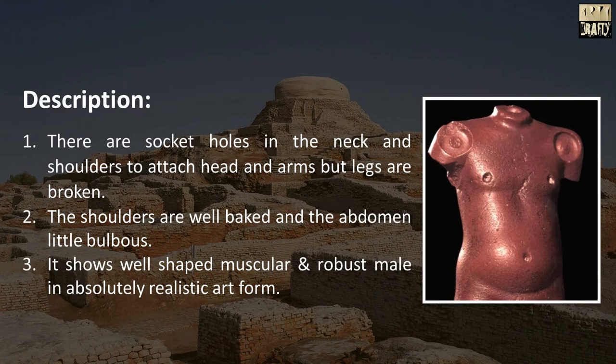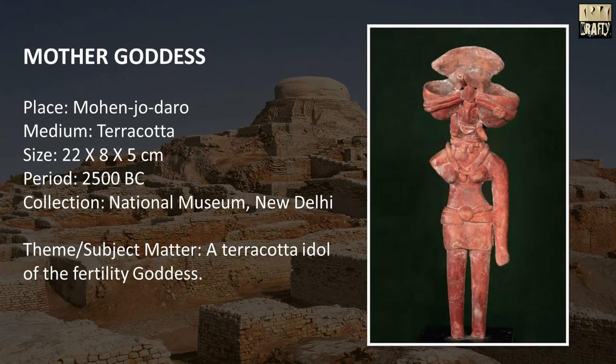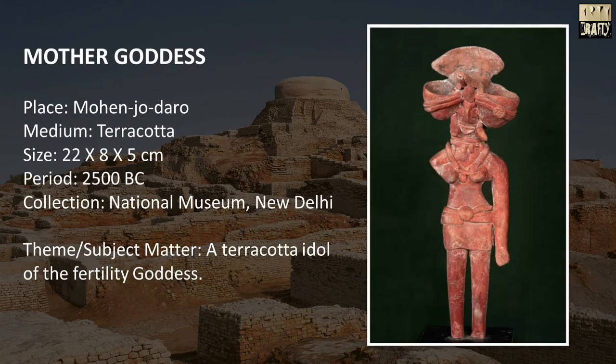There are socket holes in the neck and shoulders to attach the head and arms, but the legs are broken. The shoulders are well built and the abdomen is little bulbous. It shows a well-shaped, muscular, and robust male in absolutely realistic art form.